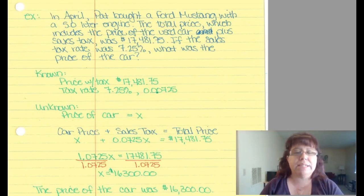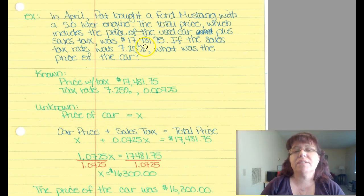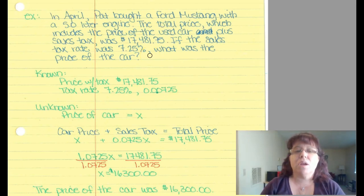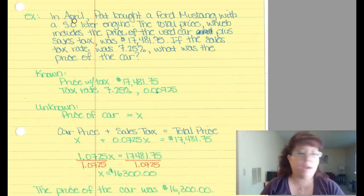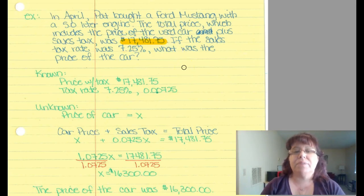Occasionally in application problems you'll get information that mathematically we just don't need. For example: in April, Pat bought a Ford Mustang with a 5.0 liter engine. The total price, including the car price plus sales tax, was $17,481.75. If the sales tax rate was 7.25%, what was the price of the car? The month and the engine size are irrelevant. What matters is the total price of $17,481.75 and the sales tax rate of 7.25%.